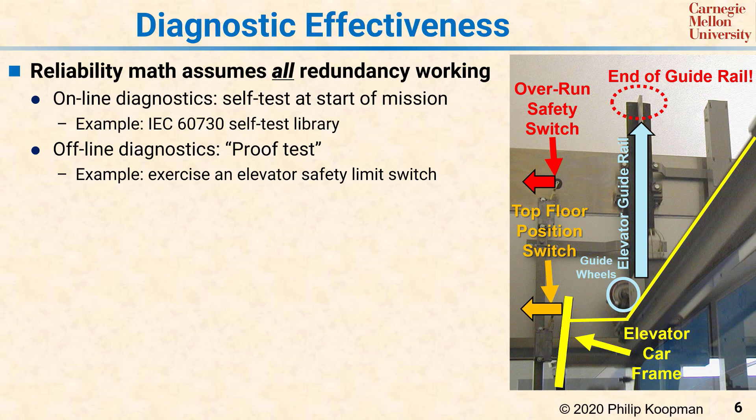The answer is to use a proof test to intentionally overrun the top floor and activate that switch. This can be done periodically by an elevator mechanic running the elevator very slowly in a manual safety mode just to make sure that switch is tested. Testing that switch is a proof test to prove that it still works. This is a general concept that needs to be applied periodically to any redundancy to make sure it is still there and still working.